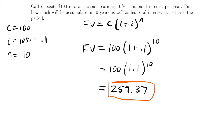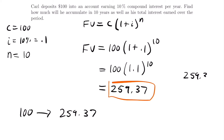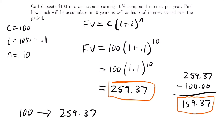The question also asks for his total interest earned over the period. He started with $100 and ended with $259.37. He didn't make any withdrawals or additional deposits, so all the growth came from interest. Subtracting: $259.37 minus $100 gives us $159.37 of interest earned. If you're ever asked for total interest earned over a period, just take what you ended with and subtract the initial deposit, assuming no other deposits or withdrawals.